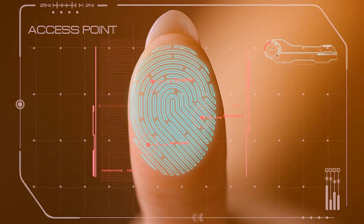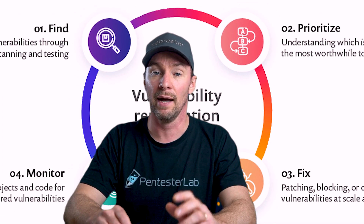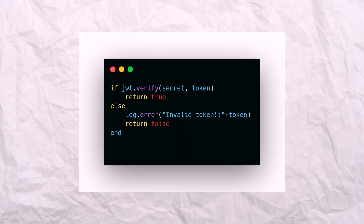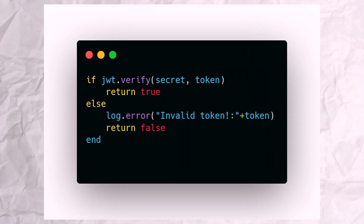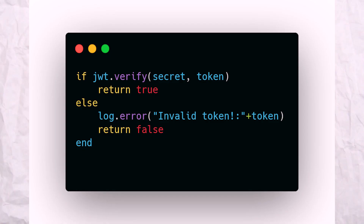Recommendation number three: generate a log entry when the verification fails. This simple step allows you to detect issues and potential attacks. Here is how: if jwt.verify(secret, token) return true like before, but this time, before returning false, we just log an error with 'invalid token' and the token itself. Very simple, very efficient.